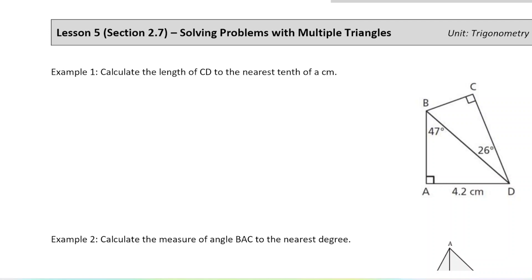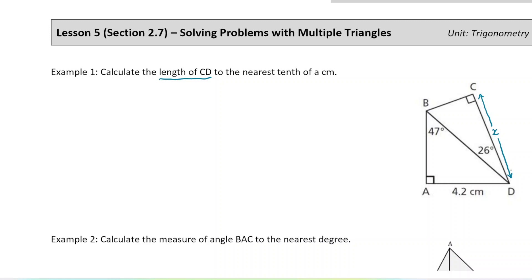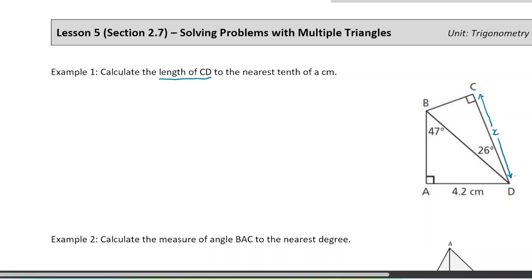Example one: we're going to be calculating the length of CD to the nearest tenth of a centimeter. So let's label this as X — that's what I'm solving for. On these multi-step questions it's always important to come up with a little strategy, an action plan. I'm not going to be able to find X right away because I know nothing else about that triangle except for the angle of 26 degrees. To find the missing side length, I need at least one other side length.